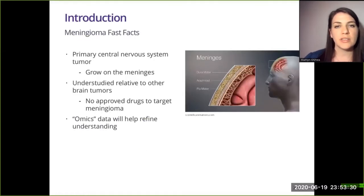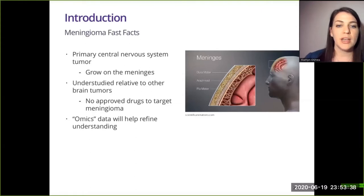Meningiomas are tumors of the central nervous system. They grow on the meninges which surround the brain. These tumors are understudied relative to other brain tumors, for example glioblastoma, and there are no targeted therapies available for these tumors.